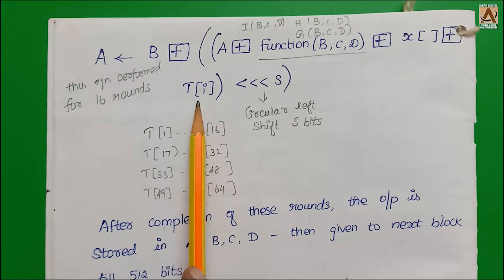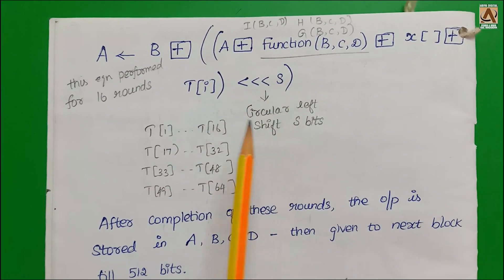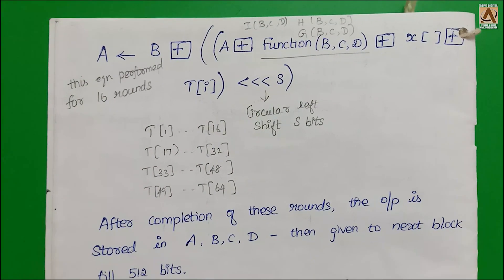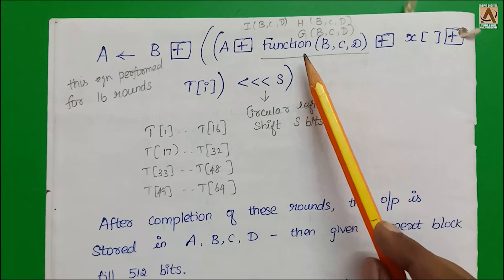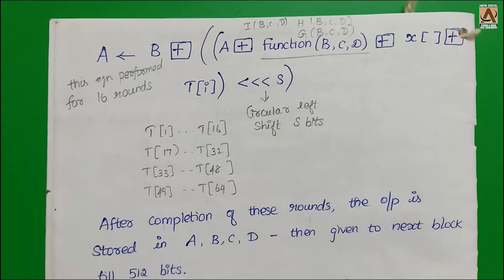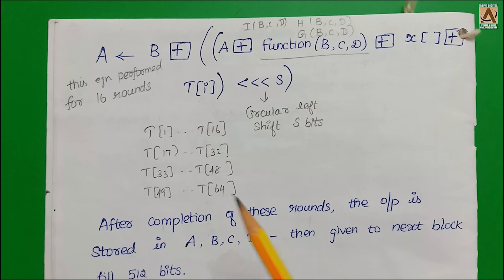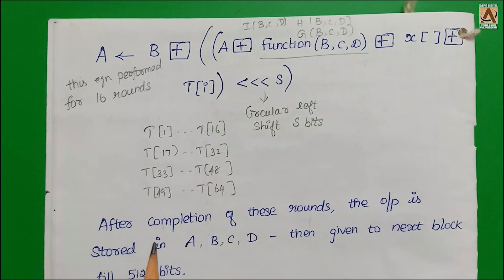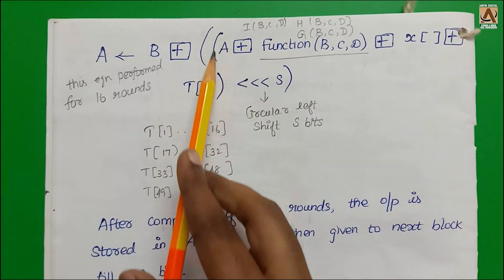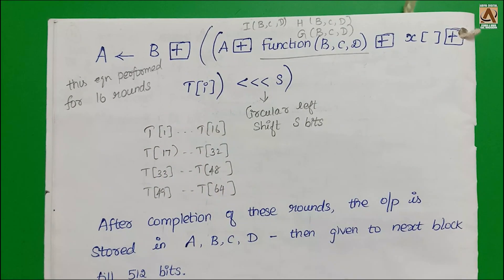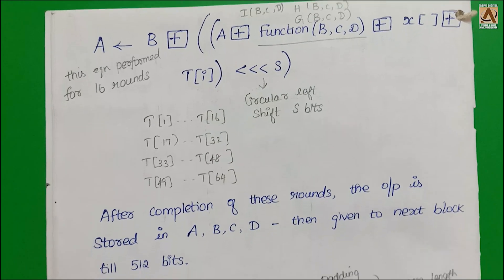This equation is performed for 16 rounds. The constant value is split into 4 buffers: 1 to 16, 17 to 32, 33 to 48, 49 to 64. All the values we generate undergo circular left shift based upon the number of bits. This is the complete process.